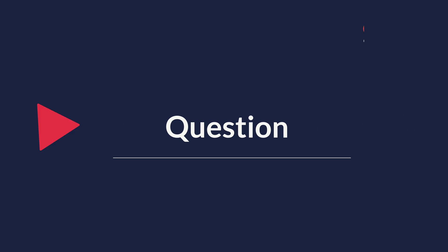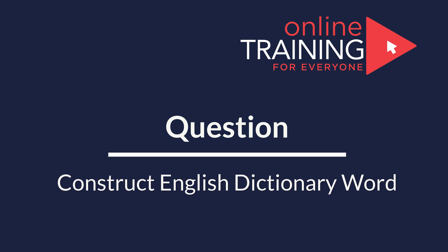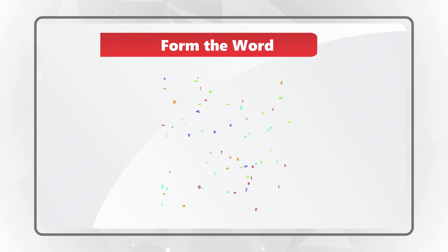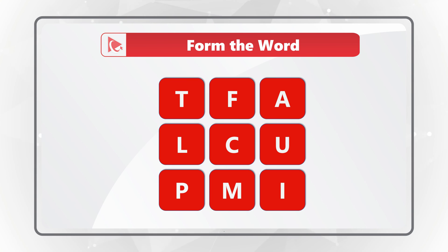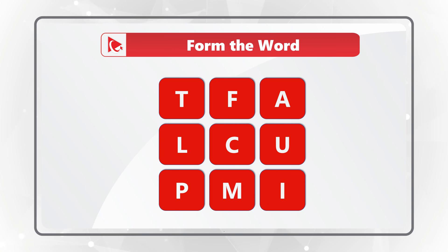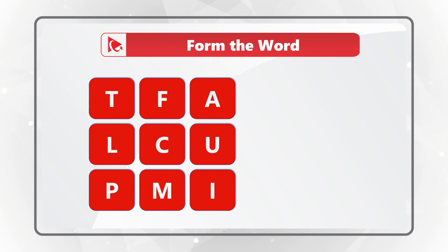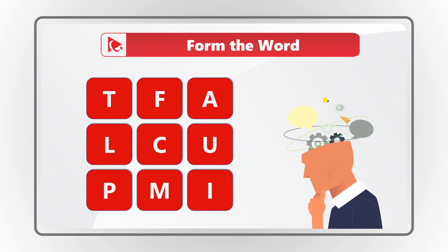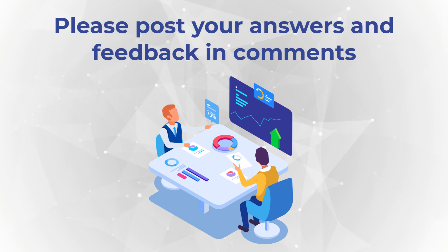Here is a question for you to practice your skills. If you know the answer, please make sure to post it in comments so I can give you my feedback. You need to form the word using all the letters only once, and you are presented with 9 letters: T, F, A, L, C, U, P, M, I. Do you see the word? This is not a trivial task because there are 9 letters, but this is a very frequently used word. Hope you found the answer. Please post it in comments. Thanks for participating and good luck!